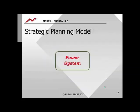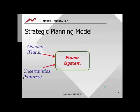The fundamental strategic planning model for the power system involves selecting among options or plans, in the presence of uncertainties or futures, in such a way as to resolve the conflicting objectives of the various stakeholders. These objectives are measured in attributes.